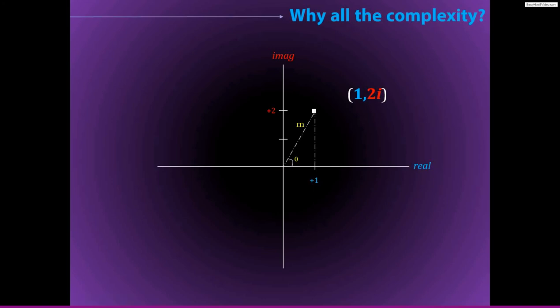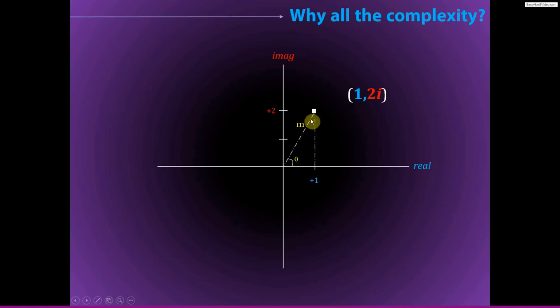The length of this line gives us the amplitude — we square it to get power — and the angle gives us the phase angle. Extending this concept to complex Morley wavelet convolution, we have essentially the same thing. The only difference is that now we are adding a time dimension: rather than one single complex number for an entire frequency, we have a single complex number for every frequency and every time point.